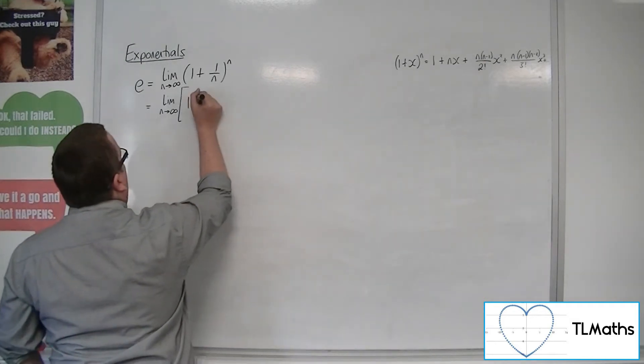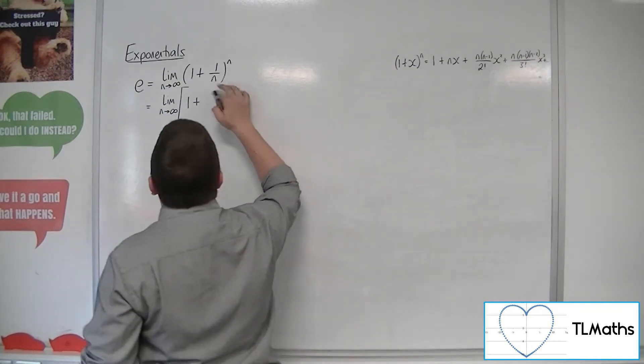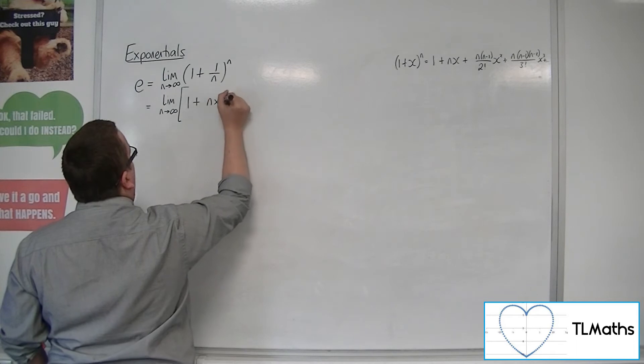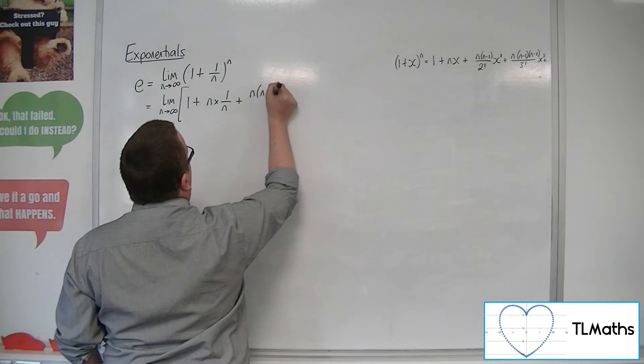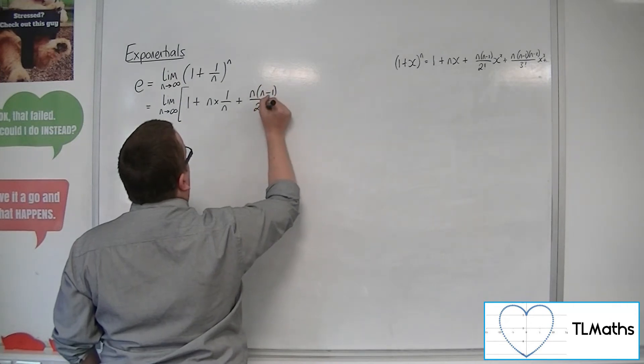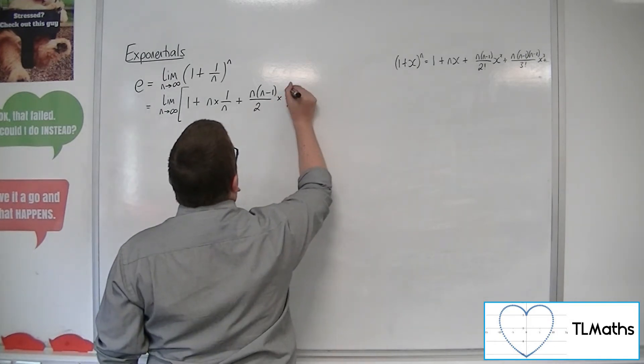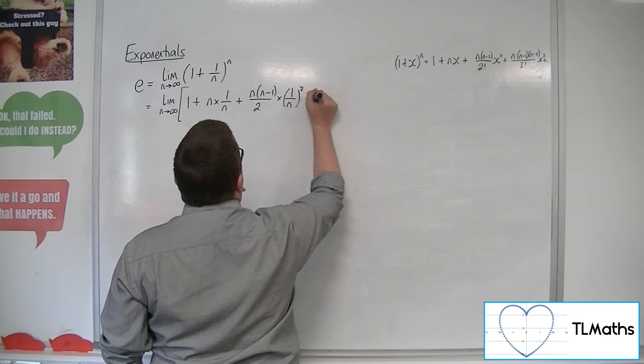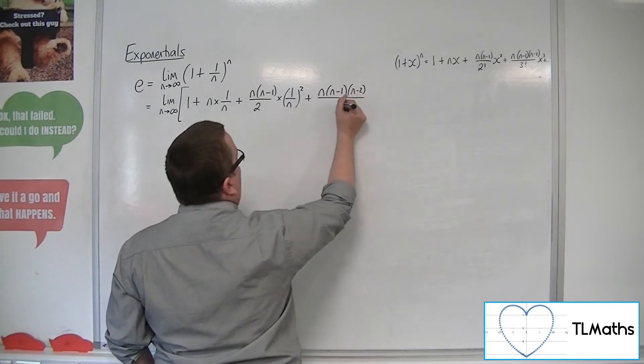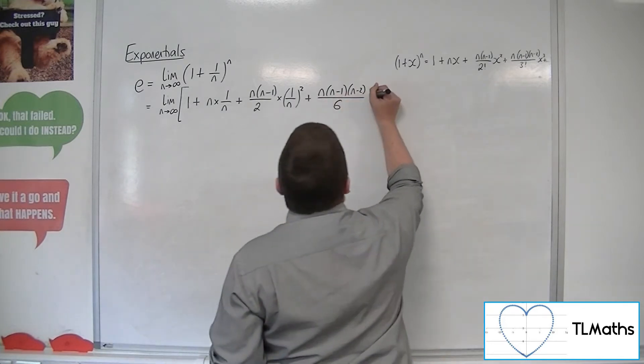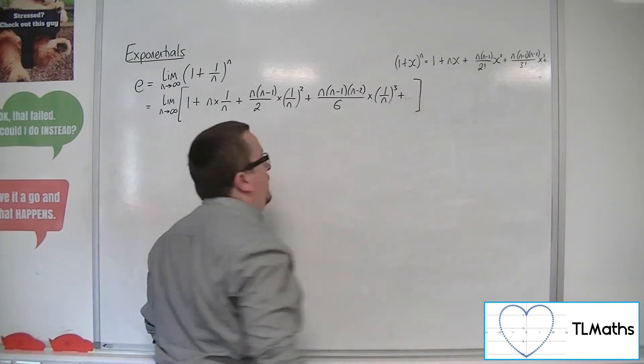So, 1 plus n times x, so n times 1 over n, plus n times n minus 1 over 2 factorial, so just 2, times by x squared, so 1 over n squared, plus n times n minus 1 times n minus 2, all over 3 factorial, which is 6, times by x cubed, so 1 over n cubed, plus a host of other terms.